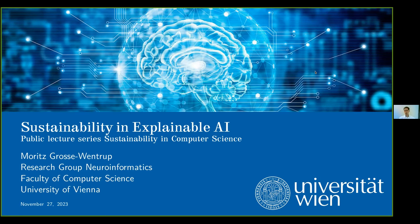I am Moritz Grosse-Ventrop, head of the research group Neuroinformatics. The first question that pops up is: what has neuroinformatics to do with explainable AI, and what has explainable AI to do with sustainability? In our research group we study biological systems — we try to understand how biological systems generate movement and cognition using computer science tools. In the past 10 to 15 years we've finally been able to build AI systems that can do cognitively interesting tasks, like large language models generating complex language.